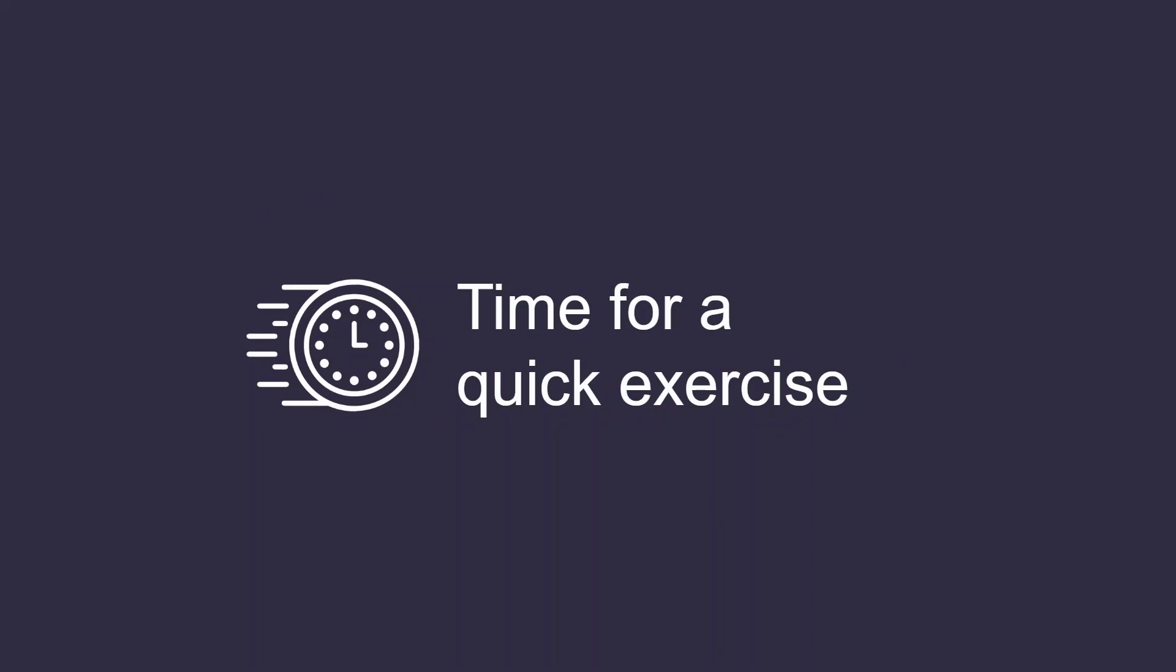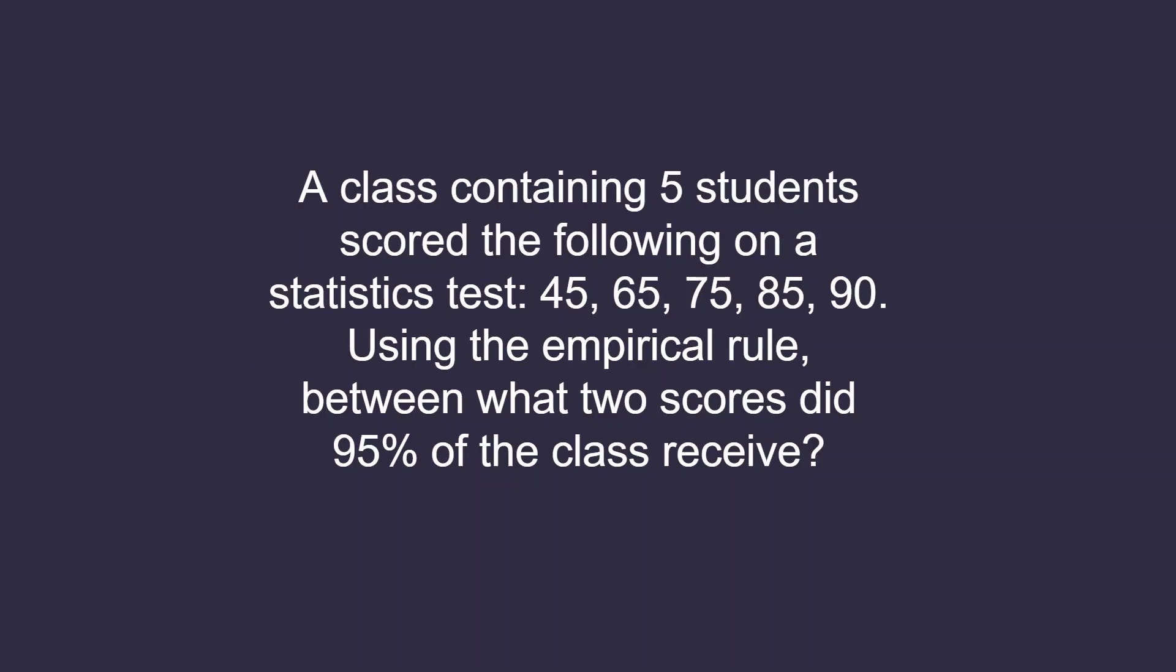Now that we have learned about the normal distribution, z-scores, and the empirical rule, let's put them all together by doing a practice problem. A class containing five students scored the following on a statistics test: 45, 65, 75, 85, and 90.